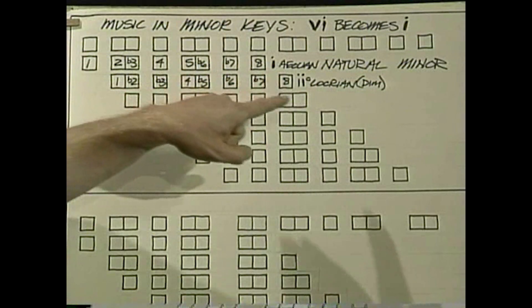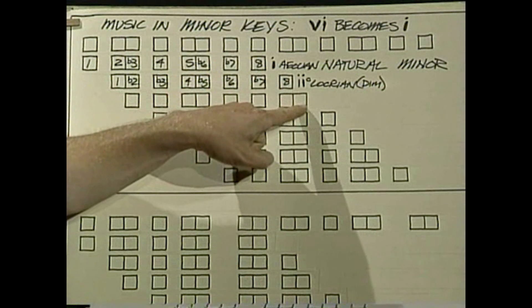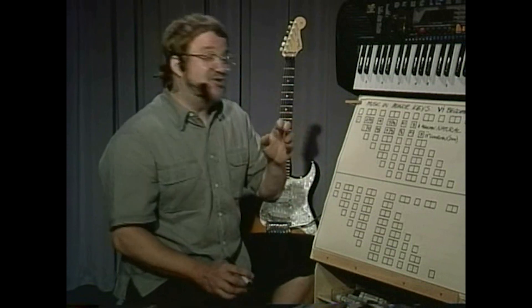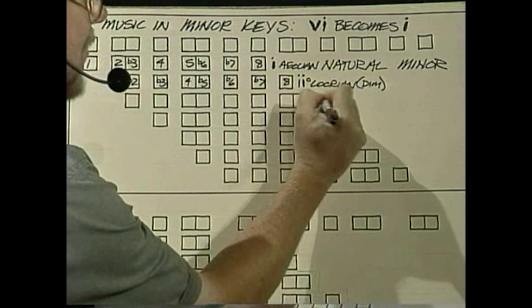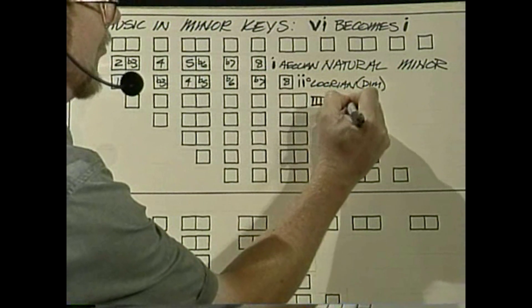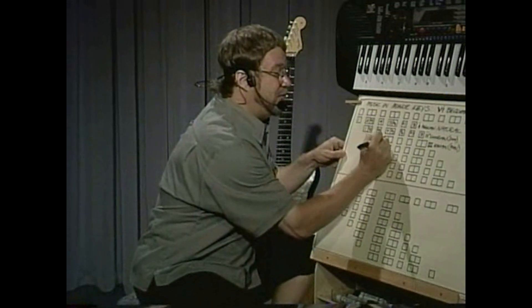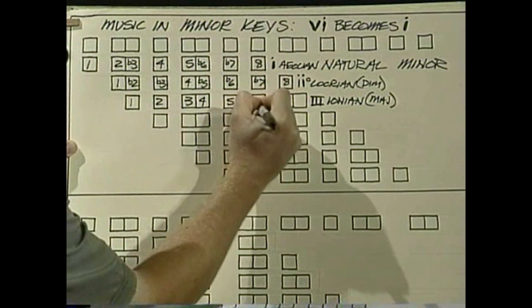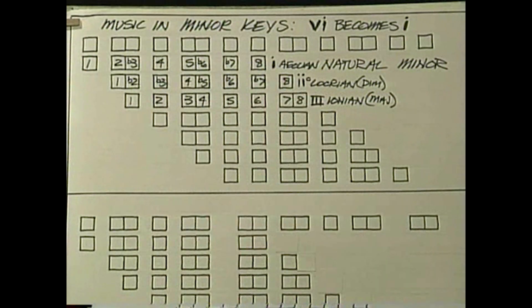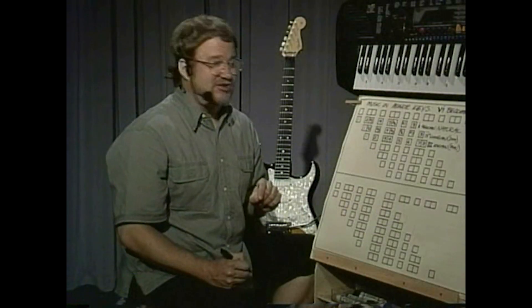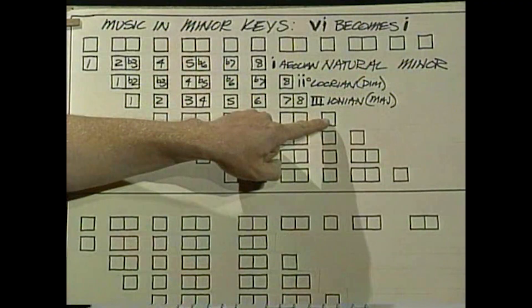Since six is one and seven is two, what is the third mode in a minor diatonic key? We're back to our good old friend the Ionian mode — the major diatonic scale itself. The three chord in a minor key chord progression is liable to be a major chord: one, two, three, four, five, six, seven, eight. Same old modes, same old order — we're just starting with six. That means the four mode is the old major diatonic two mode, the Dorian mode.